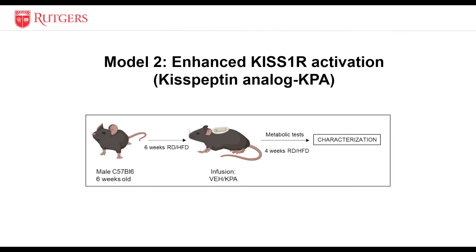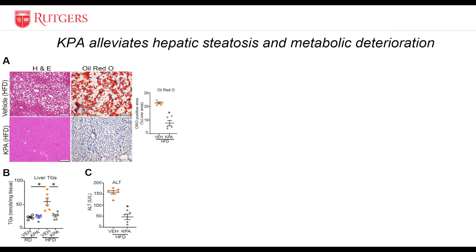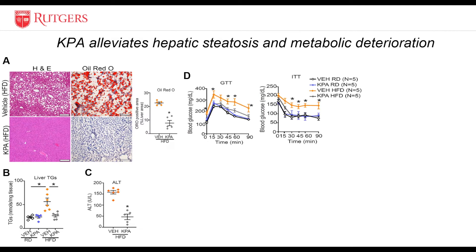Next, we examined the effect of enhanced KIS1R activation. Black-6 mice were placed on high-fat diet for 6 weeks, then administered kispeptin or PBS, which is the vehicle, and then different metabolic tests were performed over 4 weeks while maintaining the same diet regimen. Kispeptin treatment caused a reduction in steatosis as seen by H&E and Oil Red O, as well as significant decreases in liver triglycerides and ALT — opposite to what we saw in the high-fat diet-fed knockout mouse livers, demonstrating that kispeptin administration is protective. High-fat diet kispeptin analog-treated mice were also glucose tolerant and insulin sensitive compared to high-fat diet vehicle-treated controls.